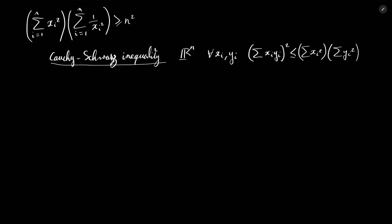This inequality is well known for those who study math at a certain level, but instead of just accepting it, we are going to prove it for the case of the Rn space. The way we are going to prove this inequality is by defining a polynomial p — a polynomial of a variable t — defined as the sum from i equal 1 to n of (xi + t·yi) squared.